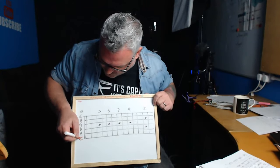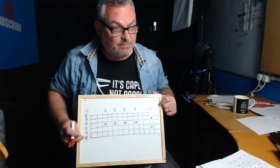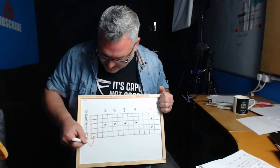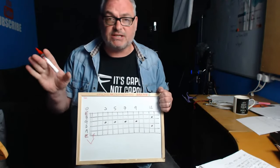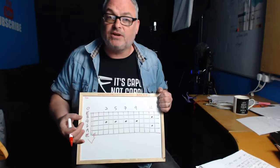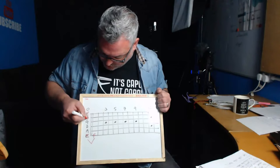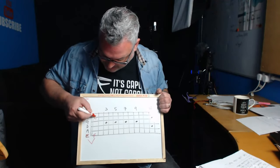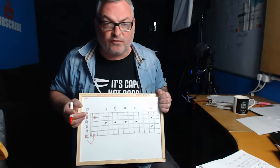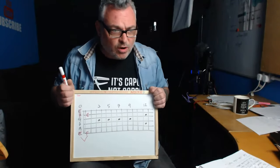On the fretboard diagram, the open string is E — that's our E string. F is right next door to it, and E and F are always next to each other. It never changes — that's a fixed pattern. The same thing applies to B and C: C is always one fret up from B, and F is always one fret up from E.